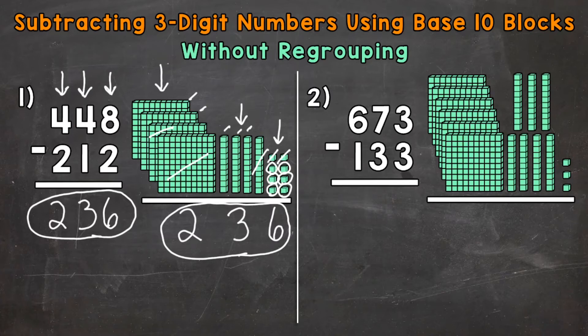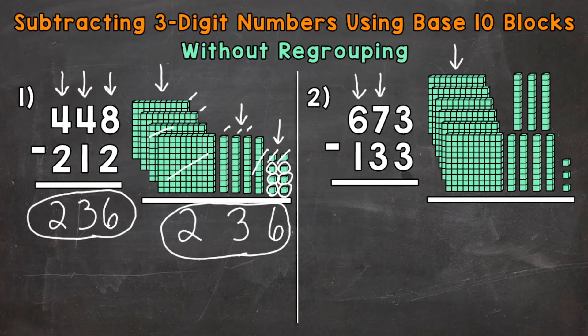Let's move on to number 2 where we have 673 minus 133. We are starting with 673 and we are subtracting or taking away 133. So we have 673 represented by base 10 blocks: a 6 in the hundreds place, so here are our 600s, a 7 in the tens, so we have our 7 tens here, and then a 3 in the ones, so our 3 ones right here. Let's subtract or take away the 133.